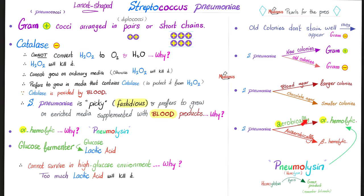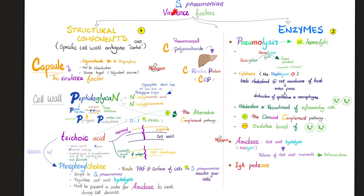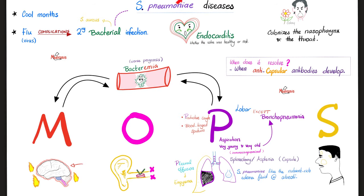Virulence factors of Streptococcus pneumoniae: focus on the polysaccharide capsule — you can target it in a vaccine. Enzymes include pneumolysin, amidase, and IgA protease, which destroys your IgA. This bacteria is very sneaky. Diseases caused by Streptococcus pneumoniae can be seen in the mnemonic MOPS: meningitis, otitis media, pneumonia, and sinusitis. Bacteremia can happen as well, especially with meningitis or pneumonia.